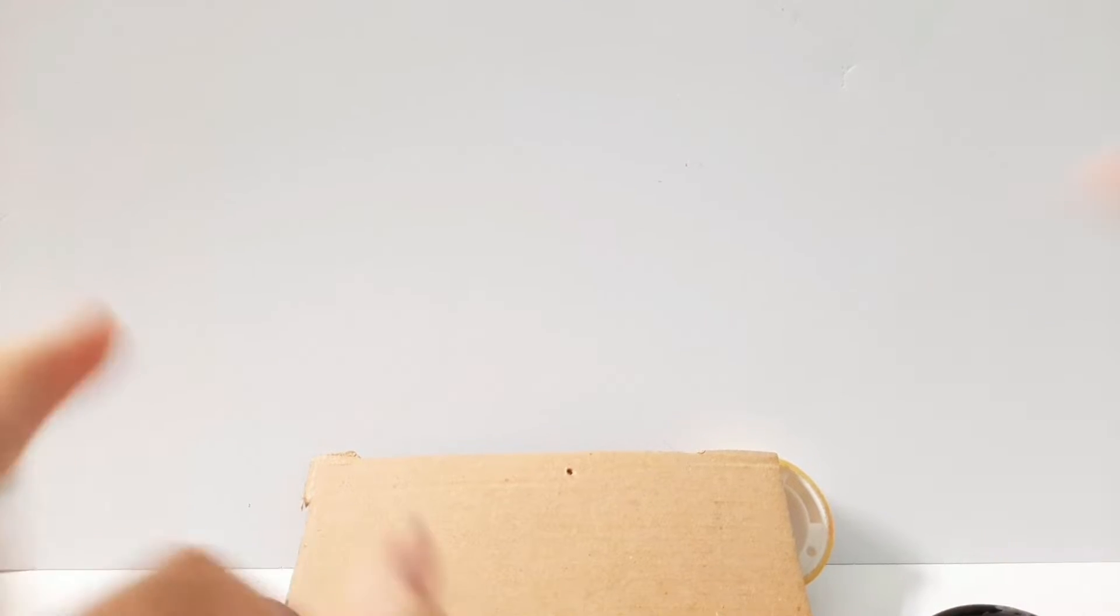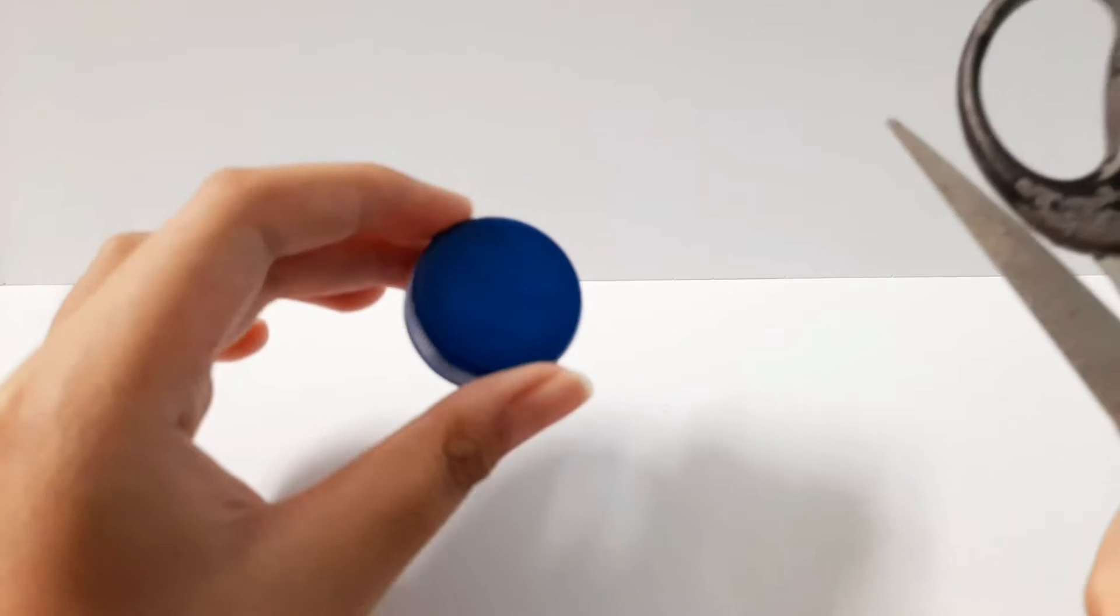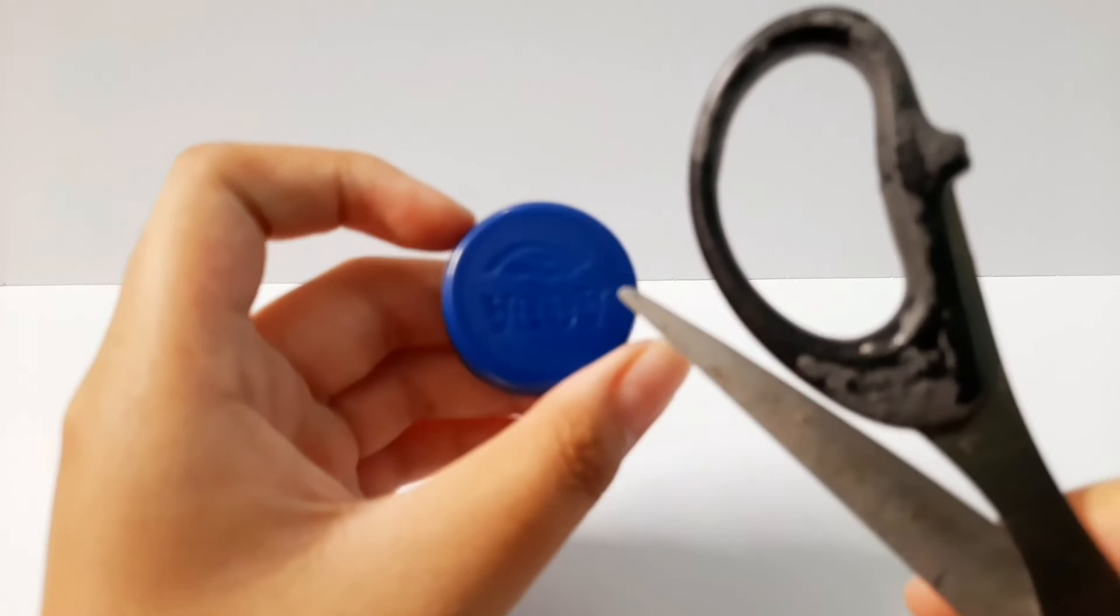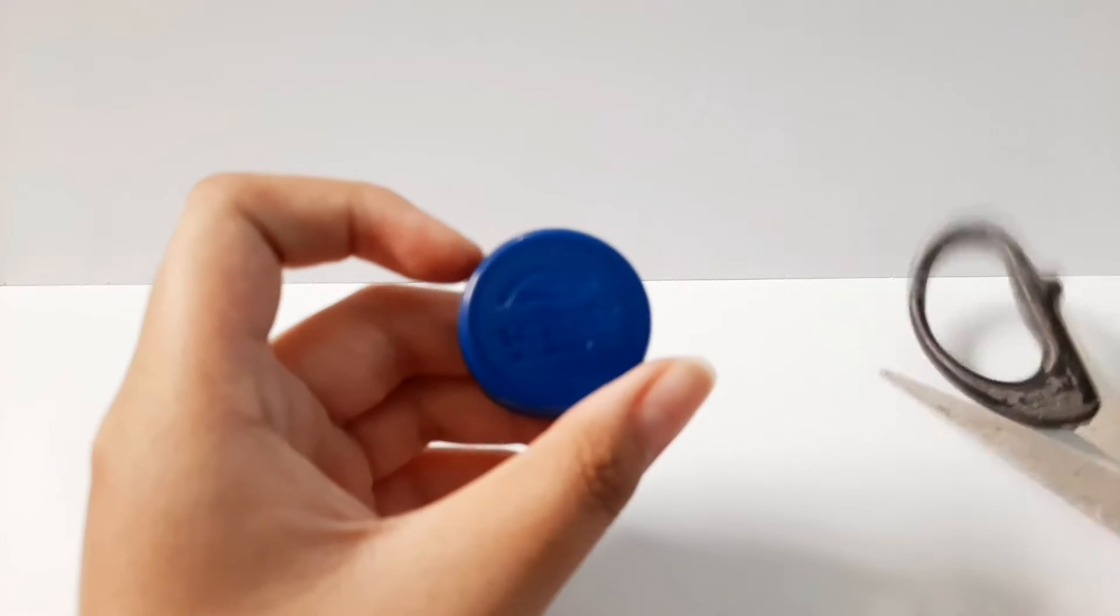So let's get started. First thing that you want to do is take your bottle cap and your scissors, then poke two holes over here and here. Like this.